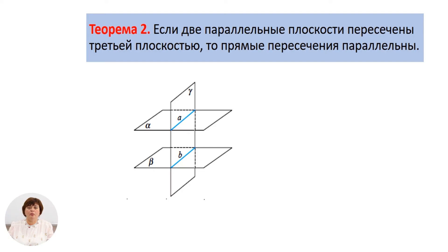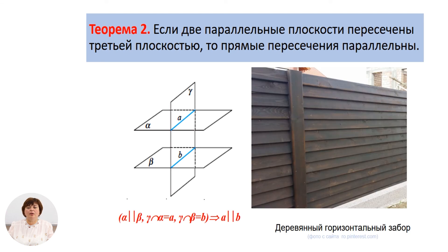Представим вторую теорему о параллельных плоскостях. Если две параллельные плоскости пересечены третьей плоскостью, то прямые пересечения параллельны. Вы видите две параллельные плоскости α и β и третью плоскость γ, которая пересекает эти две параллельные плоскости по прямым A и B. Прямые A и B параллельны между собой. В качестве иллюстрации – горизонтальная перекладина, горизонтальные рёбра которой пересекают наклонные части, образуя параллельные прямые.